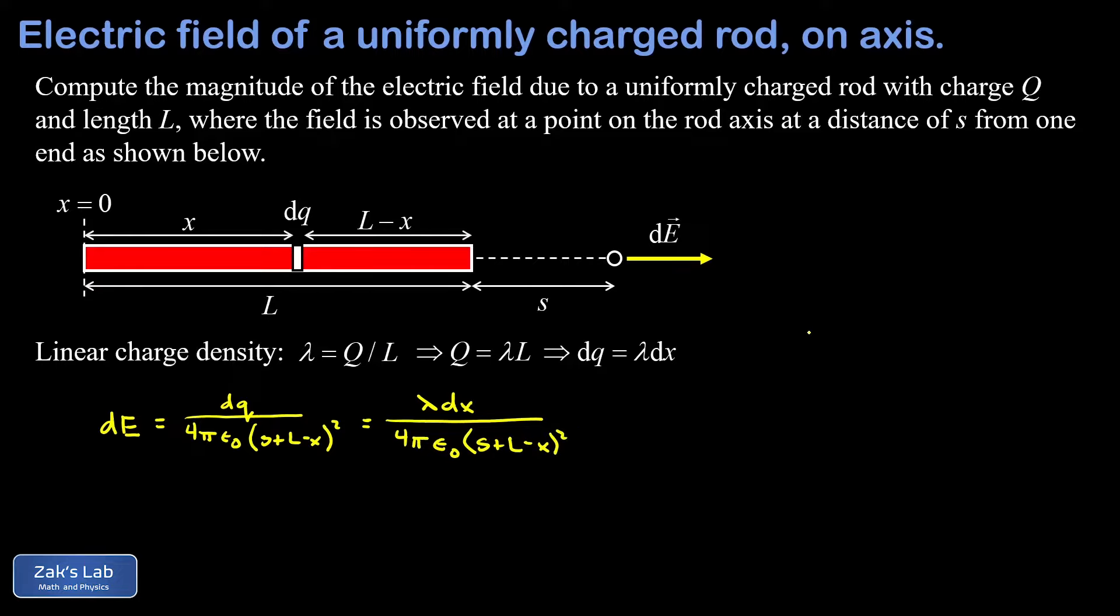So now our electric field contribution is phrased entirely in terms of a single variable x and we're ready to add these up by using integration. Our total electric field E is given by the sum of all the contributions. Those are the dE's. So we write the integral of dE and this is what an integral does. It adds up a bunch of continuously changing infinitesimal quantities to get the total.